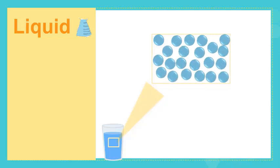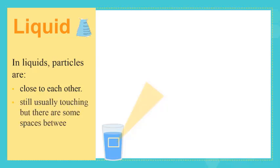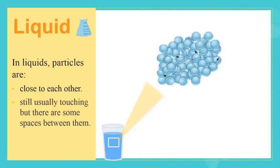Next, we'll discuss the particles of liquids. A closer look at the water shows particles that are close to each other, that are still touching, but there are some spaces between them and irregularly arranged. Now look at its arrangement. It's not as organized as that of solid, but it's also not random. So you will say that it is irregularly arranged.